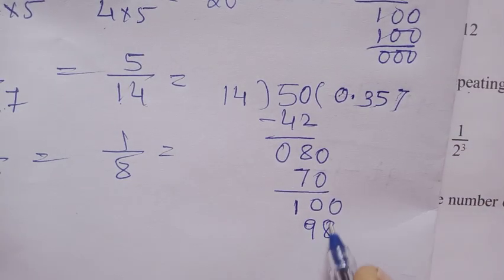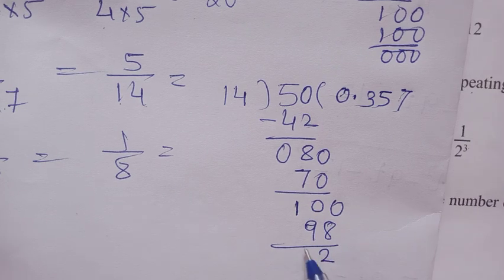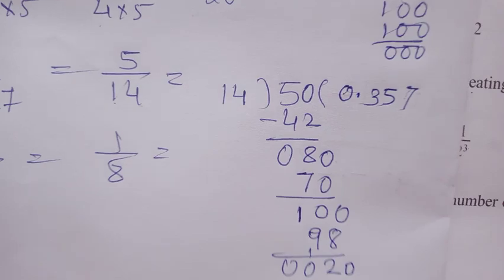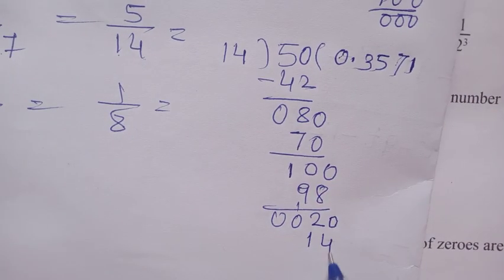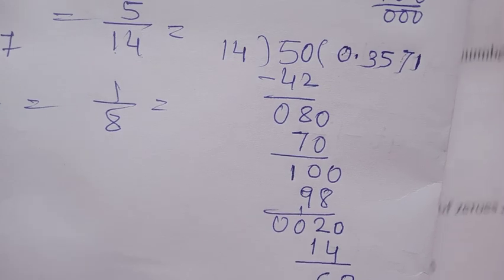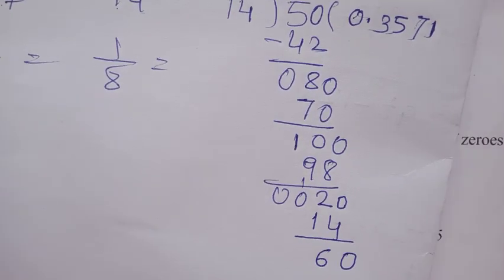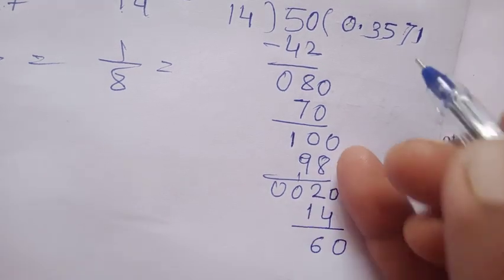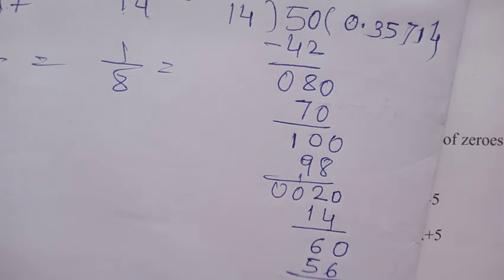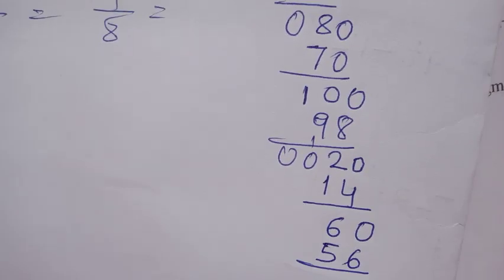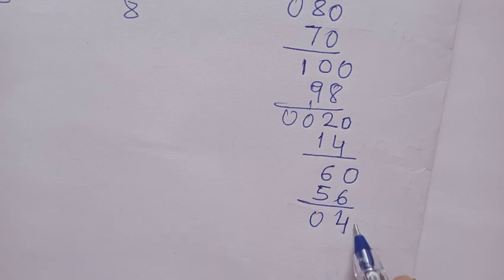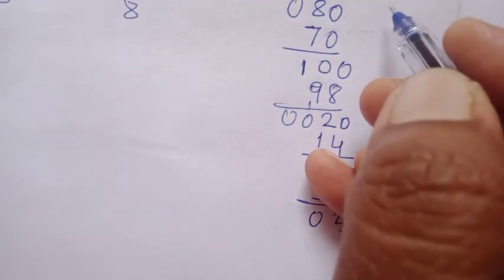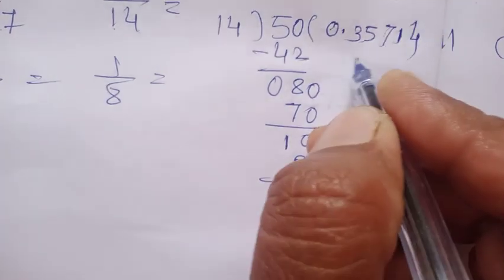14 times 7 is 98. 100 minus 98 is 2, so we have 20. 20 divided by 14... 14 goes once, which is 14. 20 minus 14 is 6, giving us 60. Then 14 times 4 is 56.